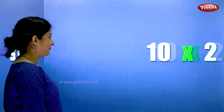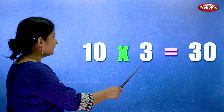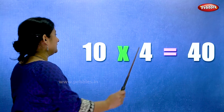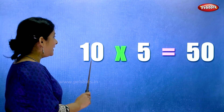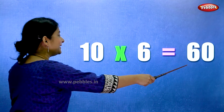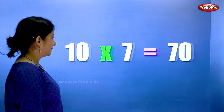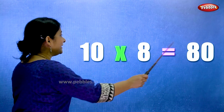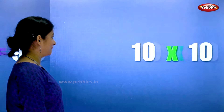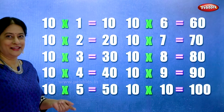Ten ones are ten. Ten twos are twenty. Ten threes are thirty. Ten fours are forty. Ten fives are fifty. Ten sixes are sixty. Ten sevens are seventy. Ten eights are eighty. Ten nines are ninety. Ten tens are hundred.